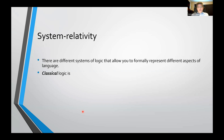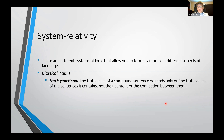There are just different systems of logic, and what they do is let you formally represent different aspects of language. What we're interested in here is classical logic. Two really distinctive features: first, it's truth-functional — the truth value of a compound sentence depends on the truth values of the sentences it contains, not on the content or connection between those sentences. Second, it's bivalent — every sentence is either true or false, there are no in-betweens, you can't be half true. Those are your only options.